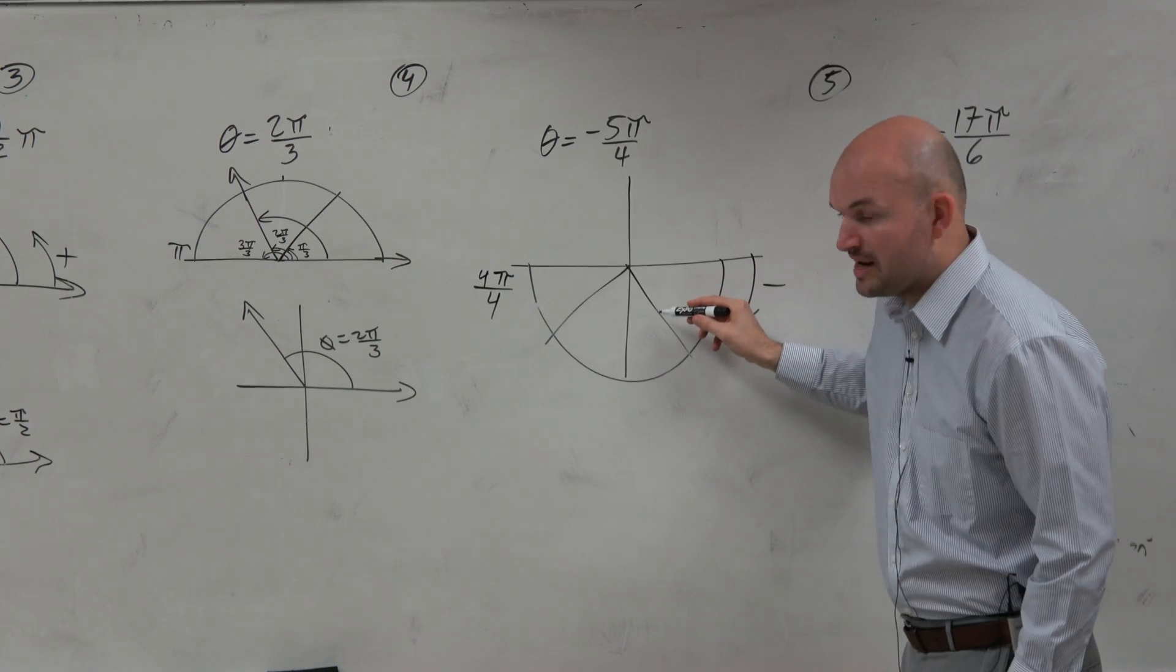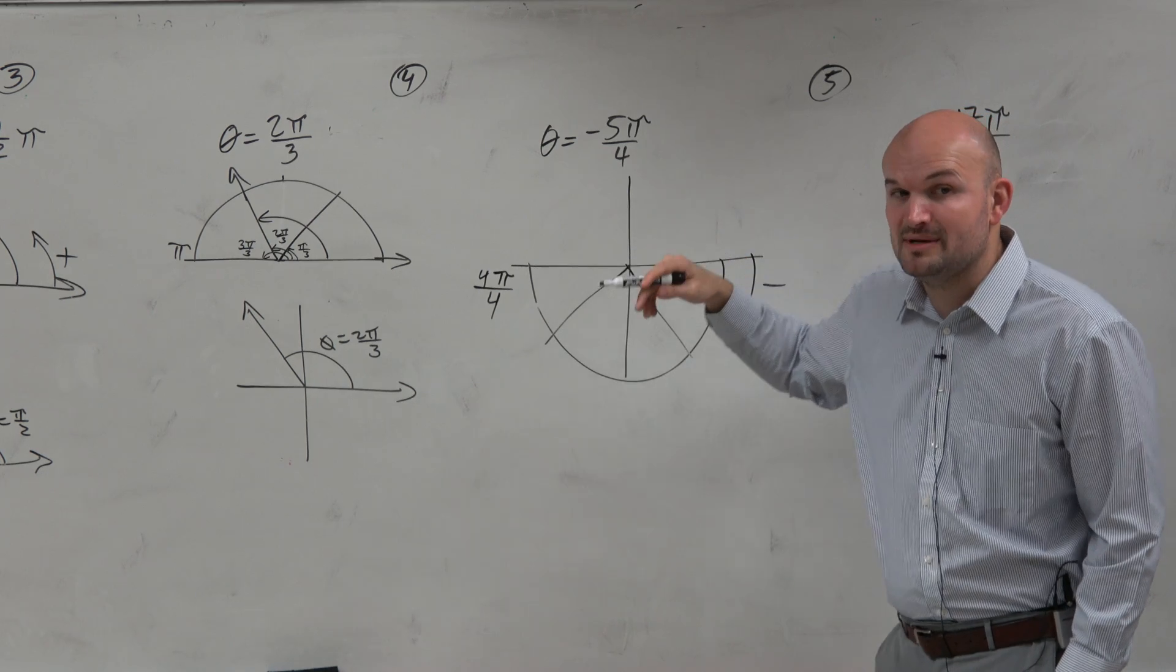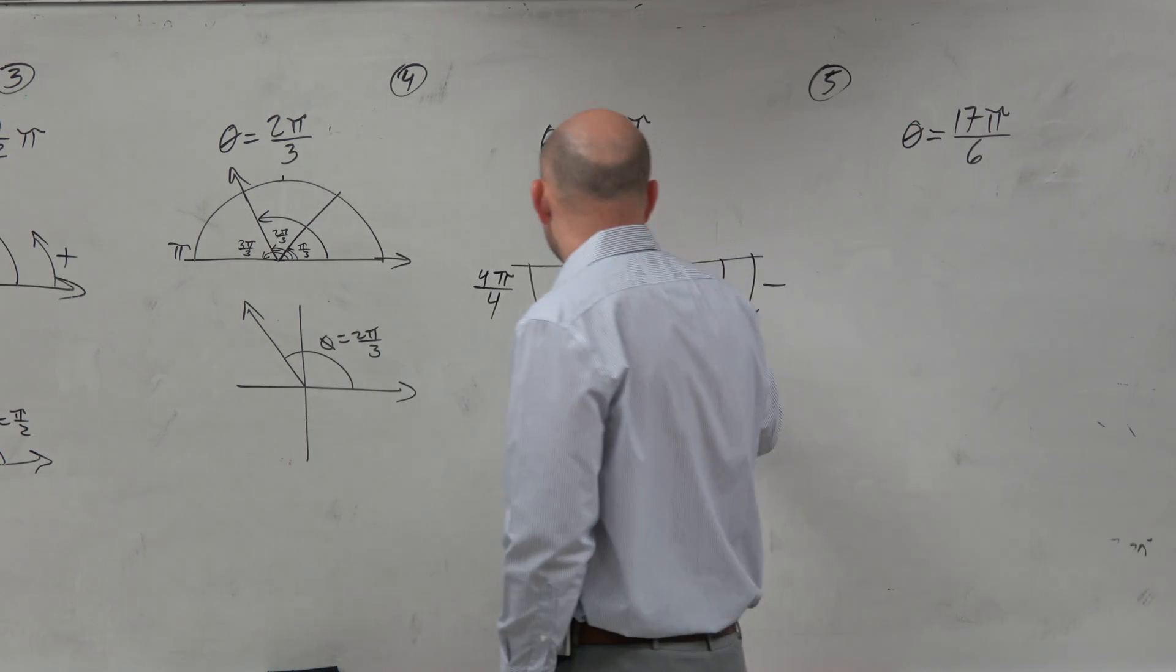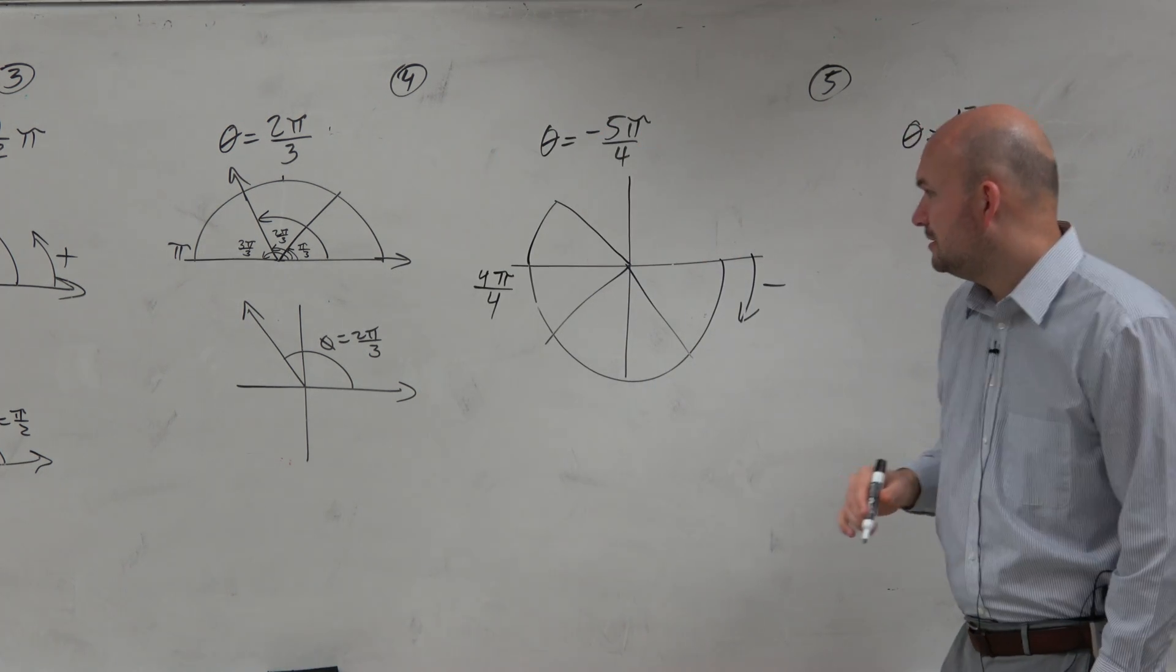So we have one pi over four, two pi over four, three pi over four, four pi over four. So I need to get to five pi over four. So that means I just need to go an extra pi over four up, right? Just one more little section up there. And that is my angle.